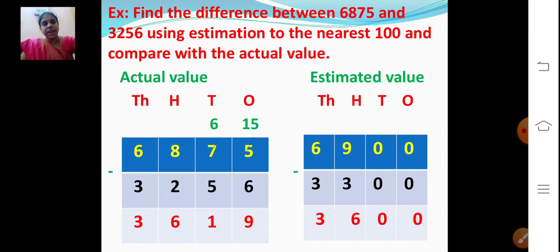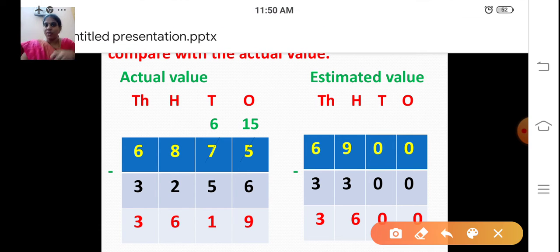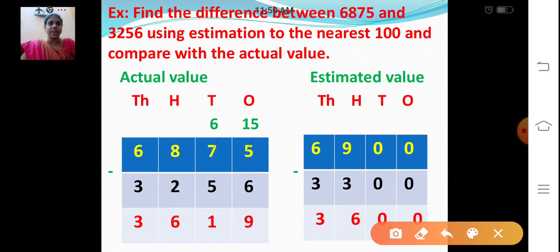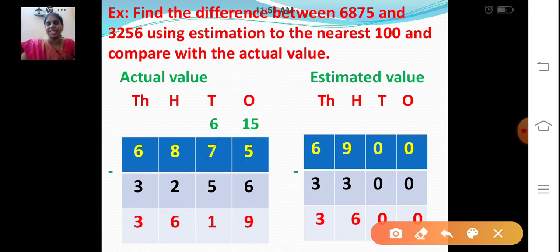First we find out the actual value. You know actual value, right? Normal subtraction. First we will do that. We are going to subtract 6875 minus 3256. Let's subtract these two numbers now.